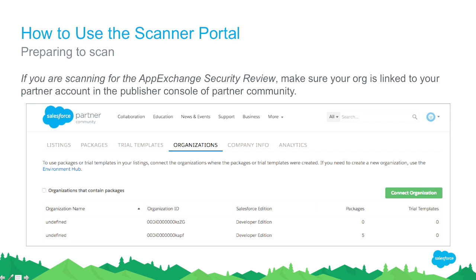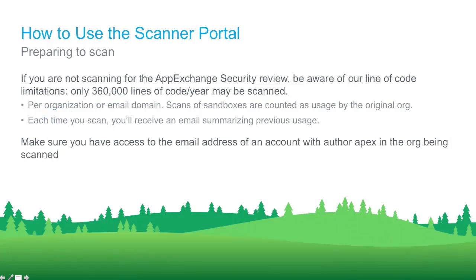Once you have the code and an organization ready to scan, if you're a partner, make sure that organization is linked to your partner account and partner community. In the publisher console, there's a list of organizations tied to your partner account — be sure to connect that organization, otherwise you'll be subject to more restrictive usage. If you're not a partner, you can still use the scanner, but you're limited to 360,000 lines of code scanned per year, limited by email domain as well as organization.